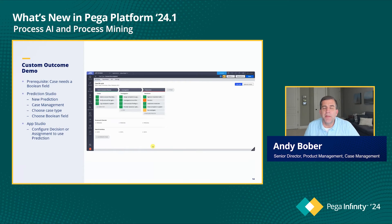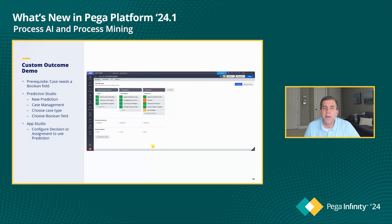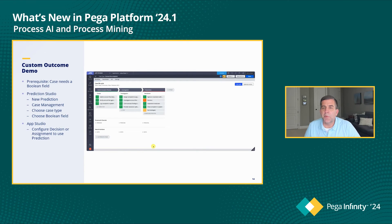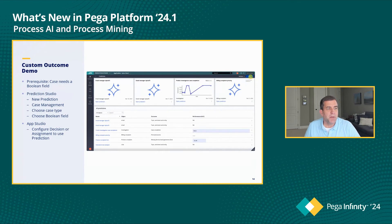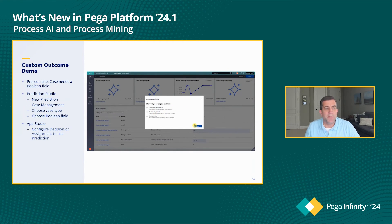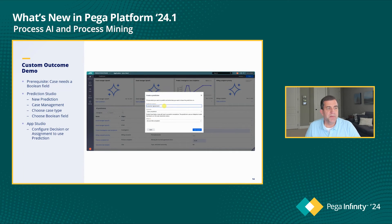Now let's look at a few net new features. First up is custom outcome prediction, which provides a ton of flexibility as it lets you predict virtually any element of an application — for example, the likely payout for a claim or the probability that a case needs to go to a specialist for review. Having this knowledge in advance lets you change both the course and the outcome of any case for the better. We'll walk through how easy it is to set up using a complaints workflow, where we use Process AI to predict the likelihood a customer agrees with the proposed resolution. We simply select case management prediction, give that prediction a name, and select from the predefined set of potential outcomes — for example, case completion or claims fraud — but this is a custom outcome, so we give it a name and select the object we are aiming to predict.